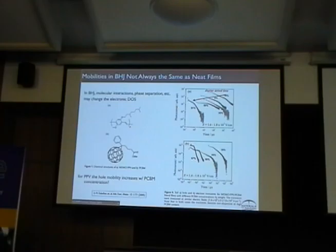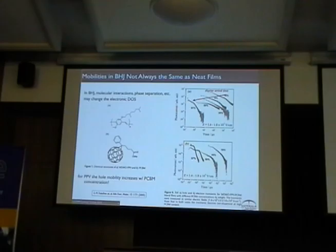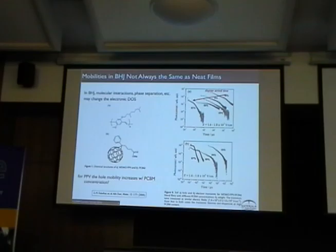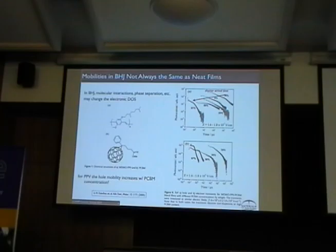You mix PPV and fullerene, do a time-of-flight experiment, and you find the hole mobility of PPV actually increases as you throw more fullerene in the blend. The fullerene mobility moves around as well. So the transport you pull out of the blend is not necessarily the same as that of the material on its own. One thing you can do is measure the transport of these things independently, mix them together, and see what you get. There are arguments about fullerene and how it might affect the packing of the chains, and also that the dielectric constant goes up when you add fullerene. Because of this disorder, there are a lot of possible explanations and it's difficult to assign a particular change to just one thing.